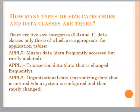How many types of size categories and data classes are there? There are 5 size categories (0 to 4) and several data classes, only 3 of which are appropriate for application tables: Master Data (data frequently read but rarely updated), Transaction Data (data that is changed frequently), and Organizational Data (customizing data entered when the system is configured and then rarely changed).